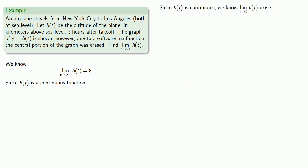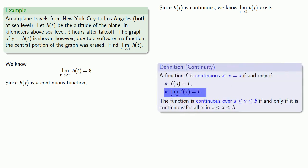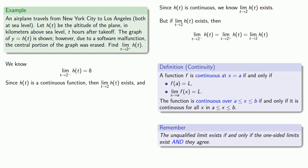Since H of T is continuous, we know that the limit as T approaches 2 of H of T exists. But if the limit exists, then the limit has to be the same whether we approach it from the left or the right.